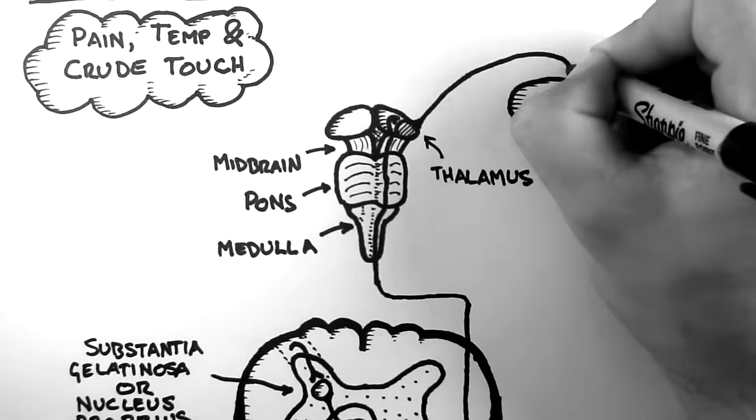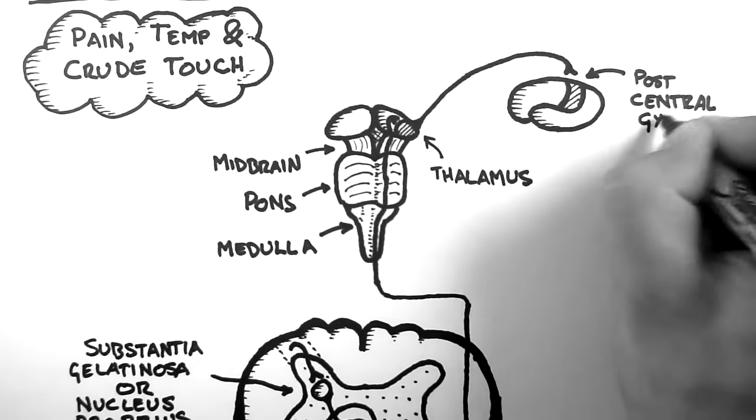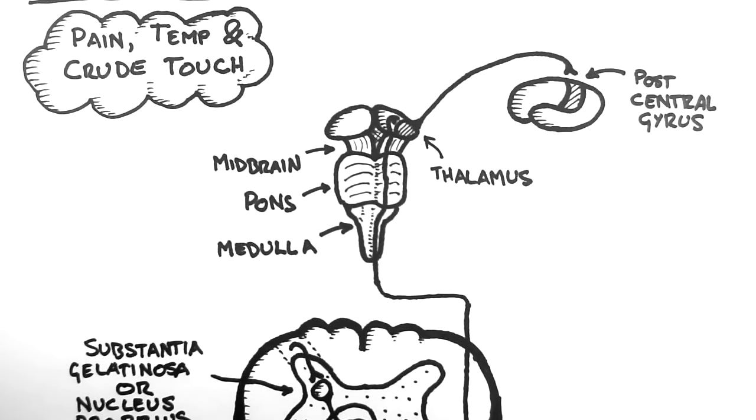The thalamus then sends projections to the postcentral gyrus of the cortex. This is the same part of the cortex to which the dorsal column medial lemniscus pathway projected. They both project to the postcentral gyrus, because they are both sensory pathways, and the postcentral gyrus is the primary sensory area.